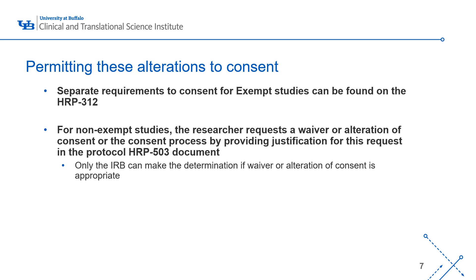For non-exempt studies that are either expedited or greater than minimal risk, the researcher can request a waiver or alteration of consent by providing a justification in the HRP 503 protocol document. However, only the IRB can make the determination if a waiver or alteration of consent is appropriate.